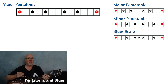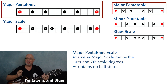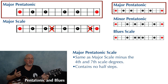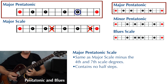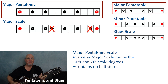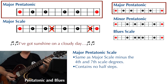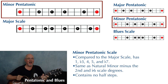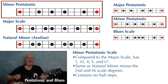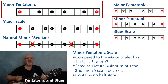We're going to look at pentatonic and blues scales. Compared to the major scale, the major pentatonic scale has a one, two, three, five, and a six — it's the same as the major scale minus the four and the seven, so there are no half steps in the major pentatonic. The minor pentatonic scale has a one, flat three, four, five, and a flat seven. Compared to the natural minor, it's the natural minor minus the second and flat six scale degrees, so just like the major pentatonic, the minor pentatonic has no half steps.